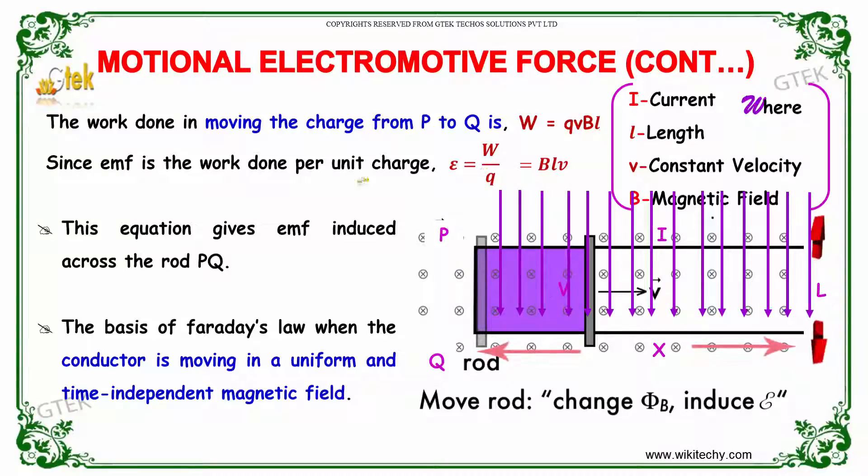The EMF epsilon equals W divided by Q equals QVBL divided by Q. You will be getting B into L into V. This equation gives EMF induced across the rod PQ, and the basis of Faraday's law when the conductor is moving in a uniform and time-independent magnetic field is proved.